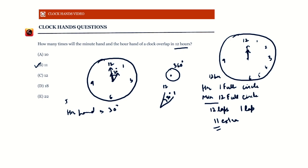In that same one hour, the minute hand starts from 12, completes a full circle, and returns to 12 — covering a full 360 degrees. So in one hour, the hour hand covers 30 degrees whereas the minute hand covers 360 degrees.